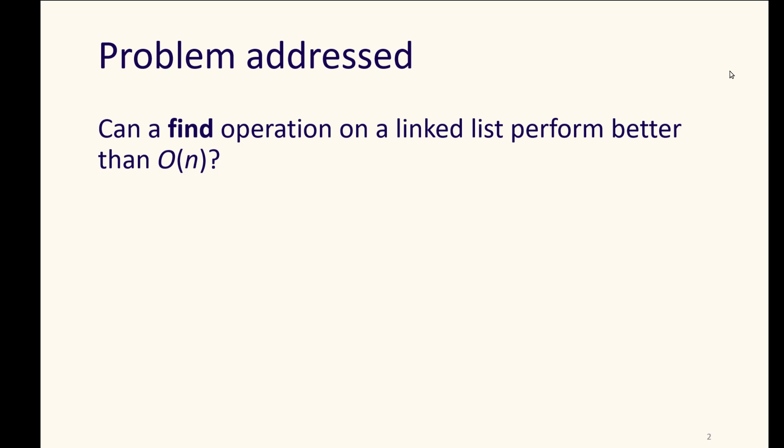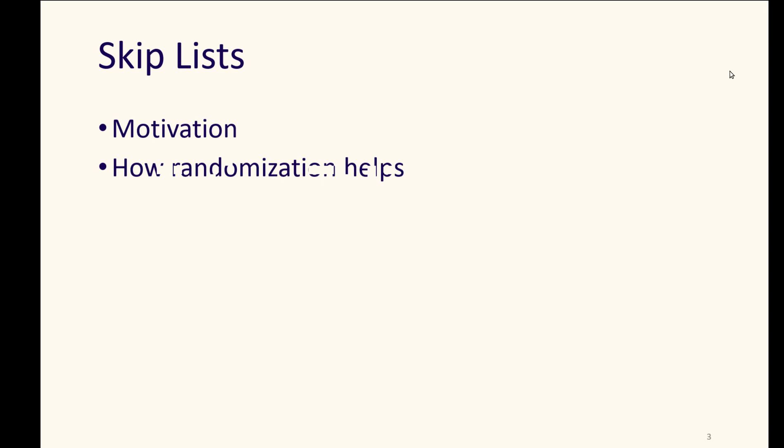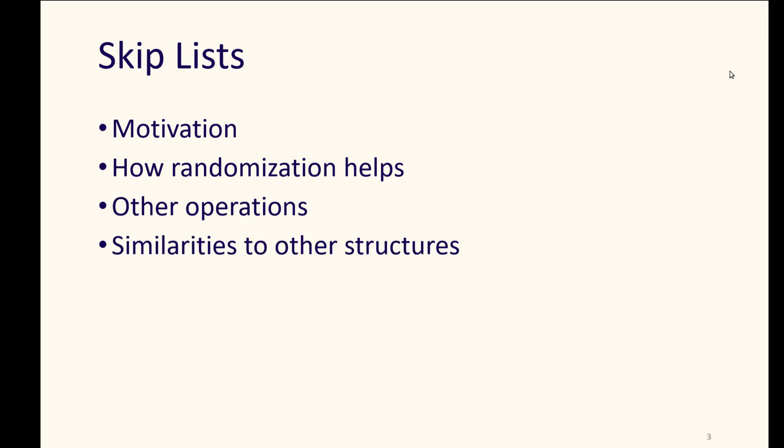We want to be able to make a faster search operation for a linked list, a faster find operation, but not incur a lot of extra costs for insertion or deletion, like how a sorted array requires higher costs for inserting or deleting. To do that, we'll use the data structure called skip list.